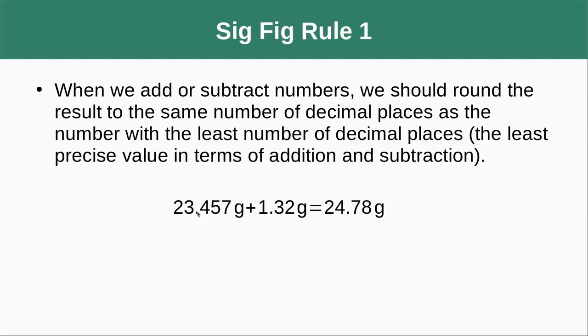So here we have three places past the decimal place. Here we have two past the decimal place. We only get to write our number two past the decimal place. We got to go to the least one and make sure that we stick to that. So we only get the two here. So we would have added these together. We would have gotten a seven as the last digit, but we round that up to get 0.78 grams.